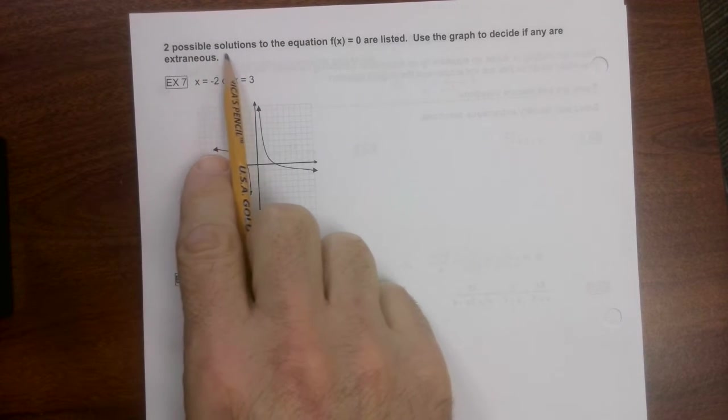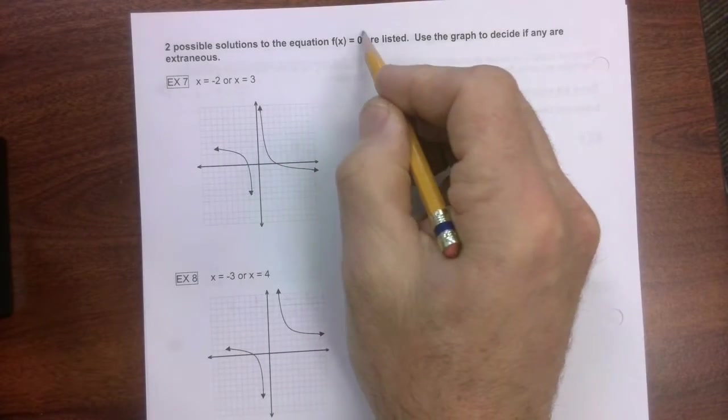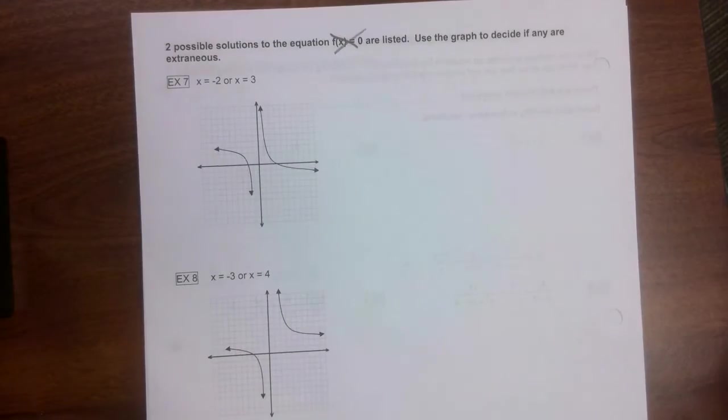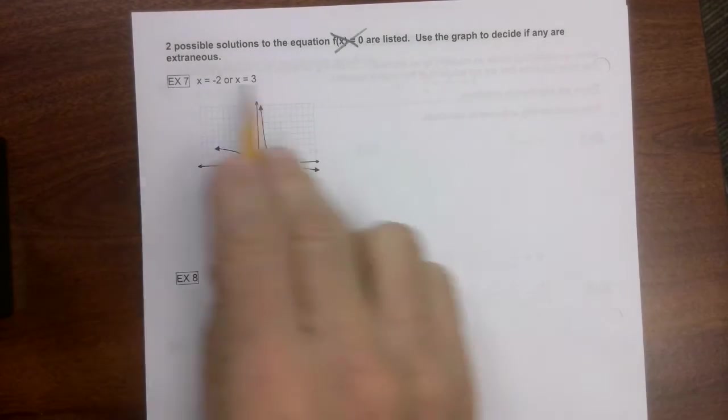It says two possible solutions to the equation f(x) = 0 are listed. In other words, they're not giving you the equation. It says use the graph to decide if any are extraneous.